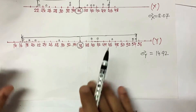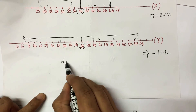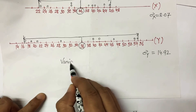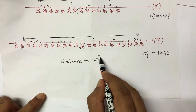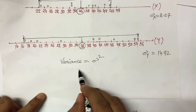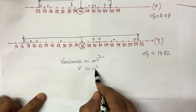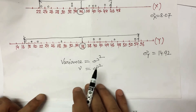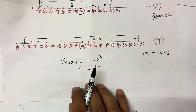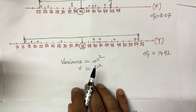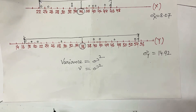I also want to explain the concept of variance. Variance is simply standard deviation squared. You can calculate variance in both cases by squaring the standard deviation values. Thank you very much.